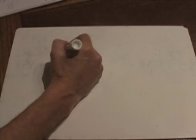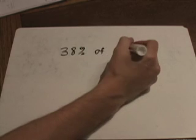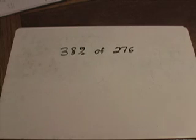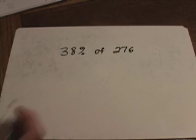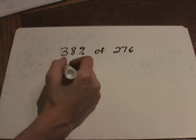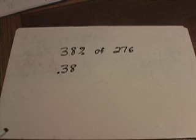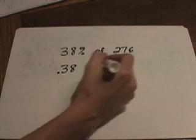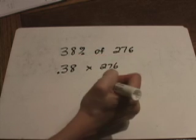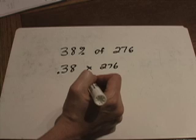Now we'll do one that gets a little more complicated. What if we want to find 38 percent of 276? Now we have to do a little more difficult multiplication, but the process is the same. 38 percent is the same thing as 0.38, times 276. We're going to multiply 276 times 0.38.